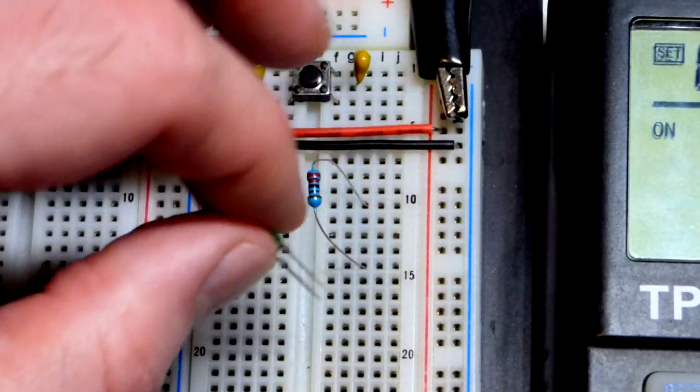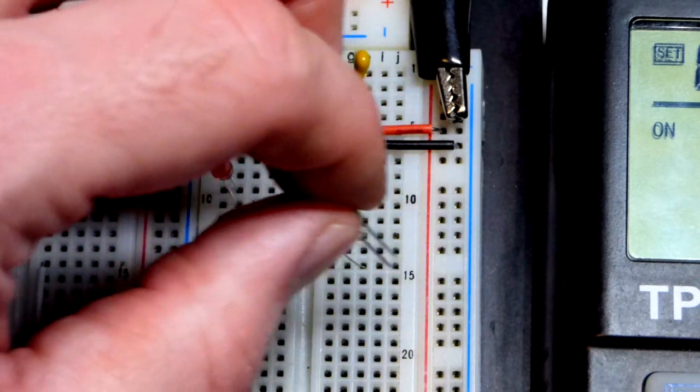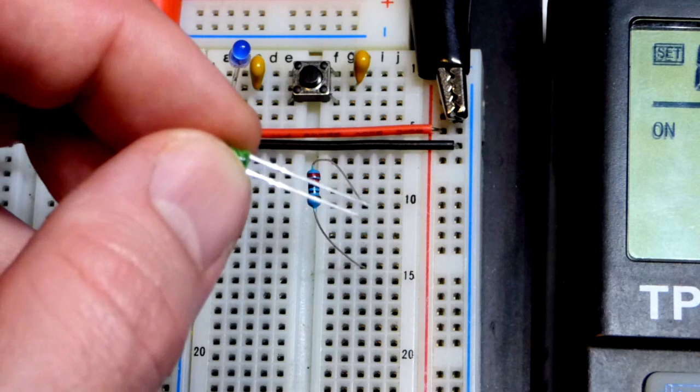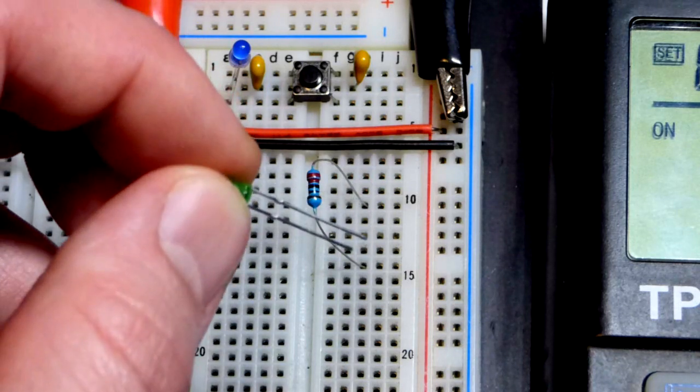We're going to take the green LED. Doesn't matter which side on the same row that we put this, but we want the long lead, the anode. We have not cut the leads of this LED. The long lead is the anode. Short lead is the cathode.